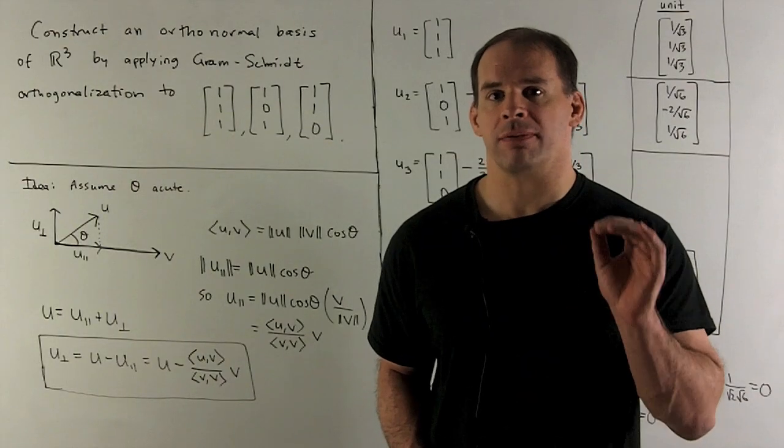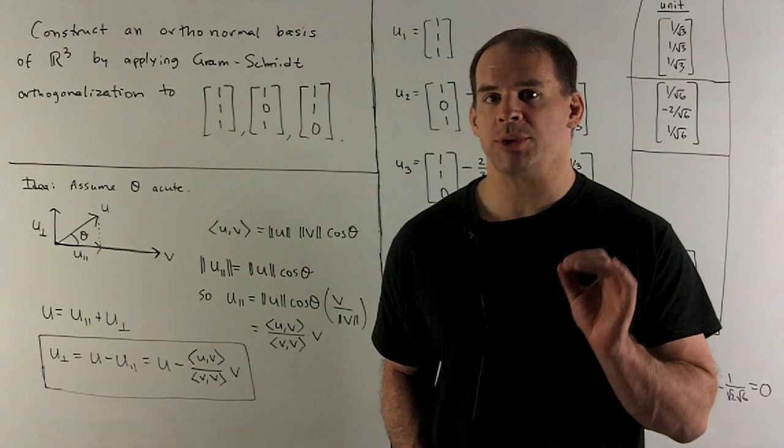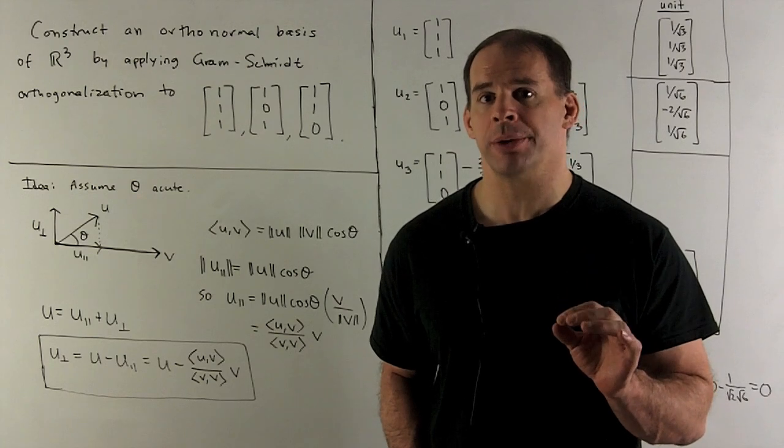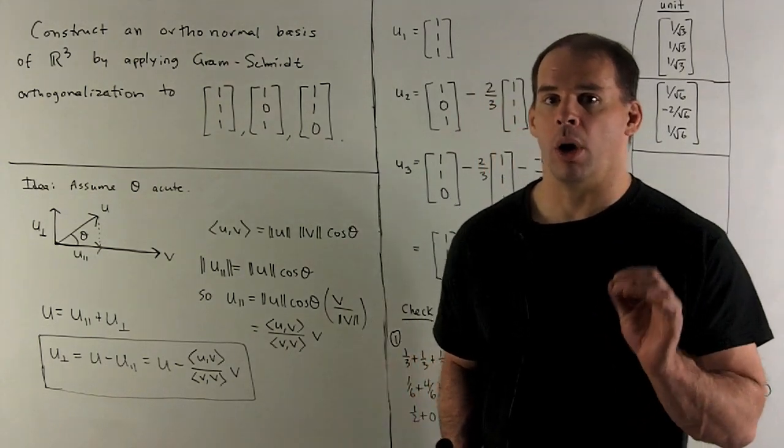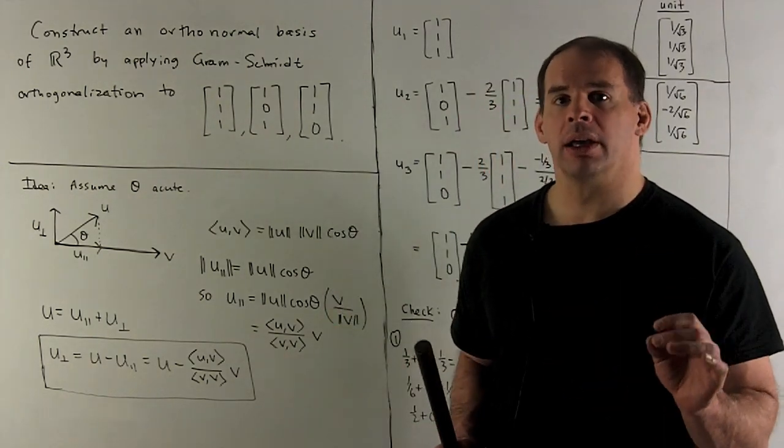Construct an orthonormal basis for R³ by applying the Gram-Schmidt orthogonalization procedure to the vectors [1,1,1], [1,0,1], and [1,1,0].